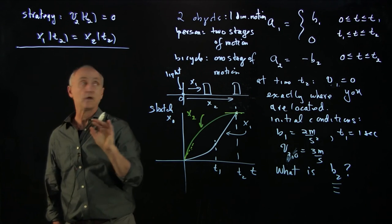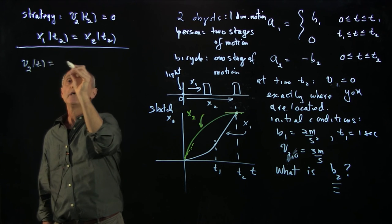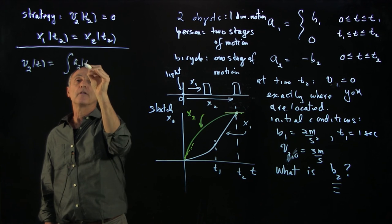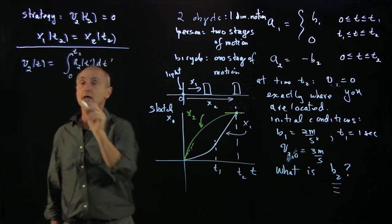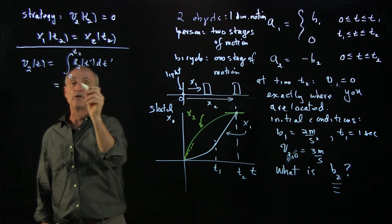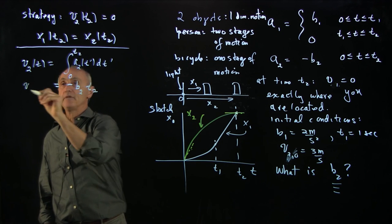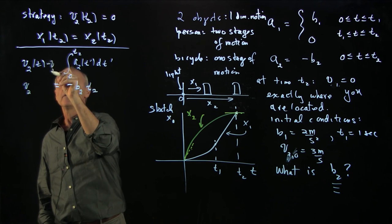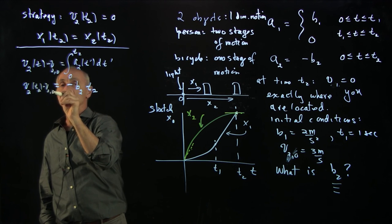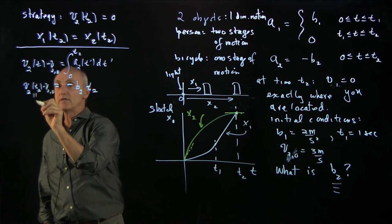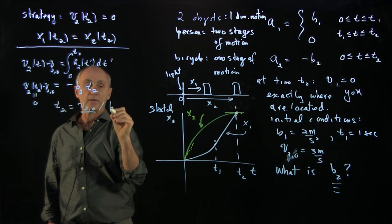Let's begin with the bicyclist. The velocity of the bicyclist as a function of time is the integral of the acceleration dt′ from 0 to t2. This is one stage of motion; the acceleration is minus b2. So this is a straightforward integral. We get v(t2) minus the initial speed equals minus b2·t2. And because we want the final velocity to be 0, we have the condition that t2 equals v2₀ divided by b2.